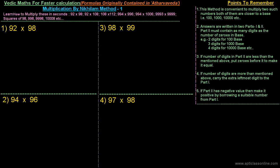In this first class I've taken the multiplication of numbers which are closer to the base 100 and less than 100. Let's start with the first example: 92×98. As I said, this method is applied to numbers closer to a base, so first we find the base to which the numbers are closer. Here, both numbers are closer to 100, so the base is 100.